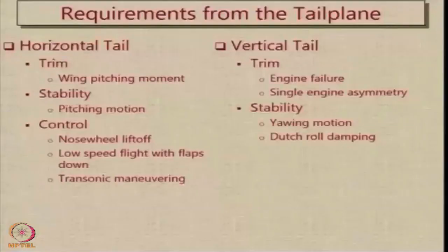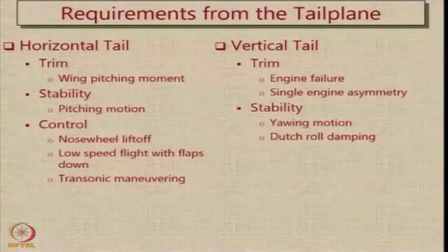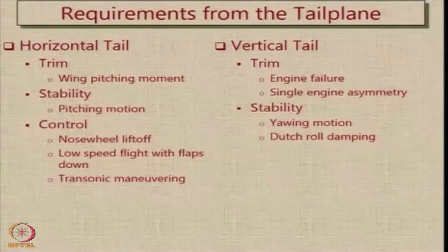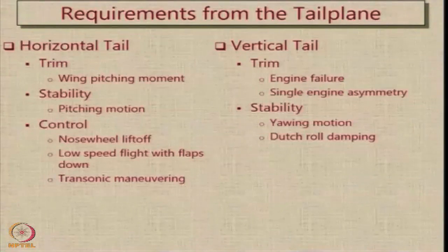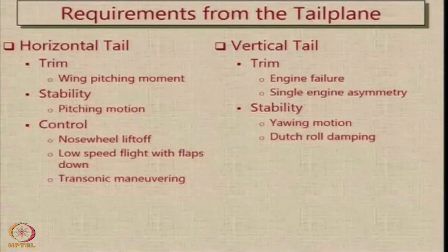The vertical tail is also needed for stability in the yawing motion and to provide adequate damping for the aircraft to overcome Dutch roll. Dutch roll is a classical behavior of the aircraft because of the coupling between the yawing and rolling motions. When an aircraft typically has very good directional stability but poor lateral stability, we end up with Dutch roll, in which the wing oscillates between roll, pitch, and a little bit of yaw.